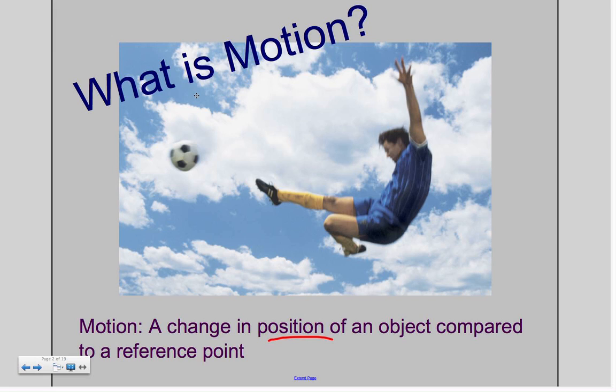So the definition of motion is a change in position of the object as a reference point. If I'm standing in the hallway and I'm still, my reference point is my place in the hallway. And then everybody that's moving around me, their change in position is showing me that they're in motion.